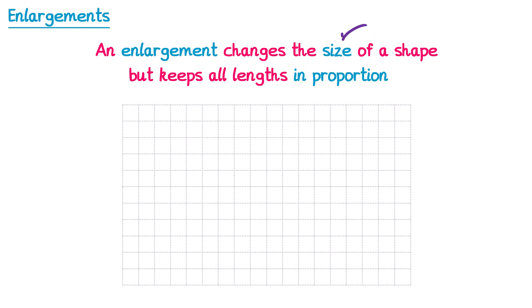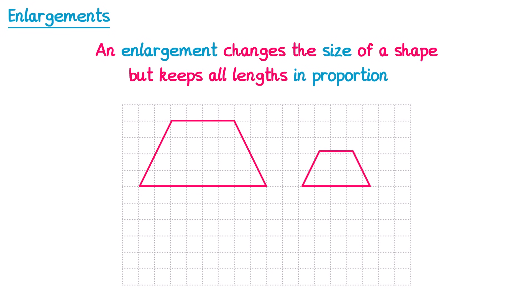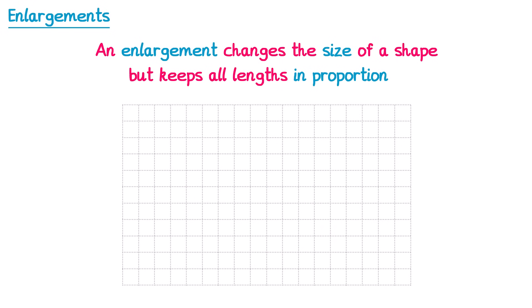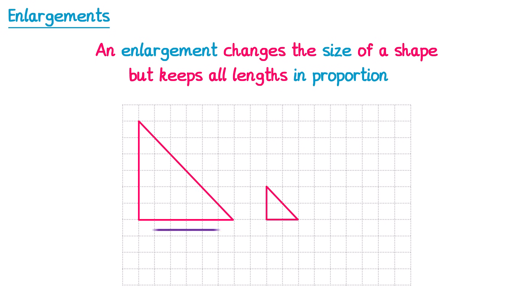We've said that an enlargement is when we change the size of a shape. We typically think of enlarging something as making it bigger, but you can actually make something smaller and it still be classed as an enlargement. So if we take this trapezium and shrink it down — the base on the original was 8 squares but the base is now 4 squares, so it's half the size. We still call this an enlargement; we just say that the scale factor was one half. Similarly, a triangle shrunk so the base goes from 6 squares to 2 squares gives a scale factor of one third.